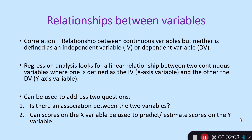The IV is the x-axis variable and the DV is the y-axis variable. You can use this type of analysis to address two particular questions: firstly, is there an association between the two variables we're looking at, and secondly, can scores on the x variable — the independent variable — be used to predict or estimate what scores should be on the y variable, the dependent variable?